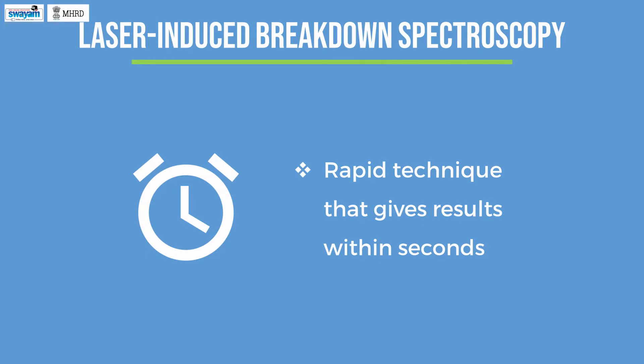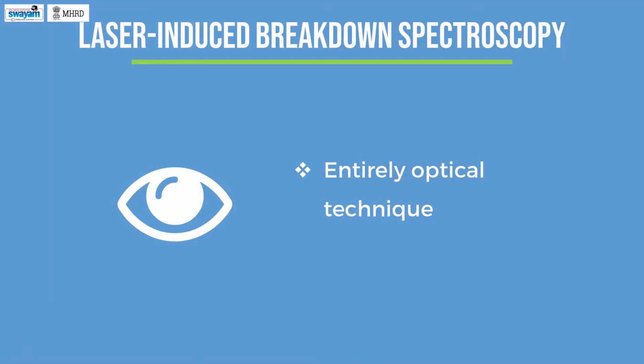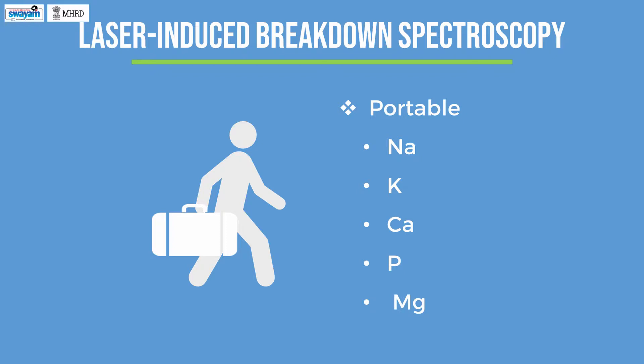LIBS is also a rapid technique, giving results within seconds, making it extremely useful for high volume analysis or online industrial monitoring. Since LIBS is an entirely optical technique, samples can be analyzed without touching them — simply by focusing the laser onto the sample. Additionally, a LIBS system can be coupled to an optical microscope for mapping elements present in a given sample. Unlike conventional AES techniques, this LIBS instrument is portable and can be used for screening samples for a variety of elements, particularly lighter elements such as sodium, potassium, calcium, phosphorus, and magnesium.